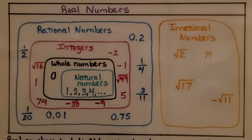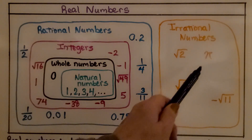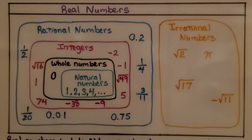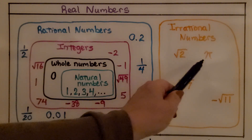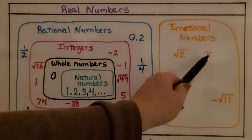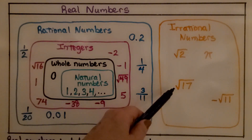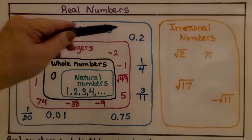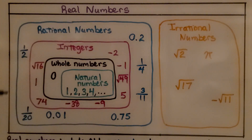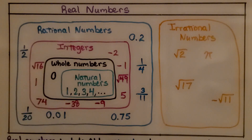Here I have a rectangular Venn diagram. These are real numbers — everything in here is a real number. Real numbers are split into rational numbers and irrational numbers. The irrational numbers are not perfect squares and can't be written as a fraction or repeating or terminating decimal, so they include numbers like the square root of two, pi — because that doesn't have an end, it just keeps going — the square root of 17, and the negative square root of 11. Rational numbers include all numbers that can be written as a fraction, the integers, whole numbers, and natural numbers.